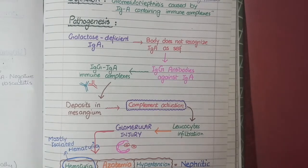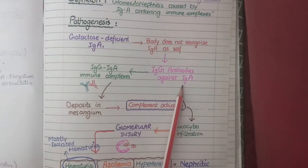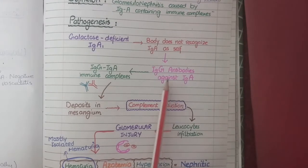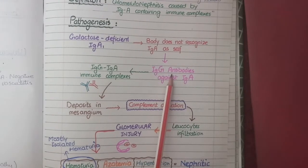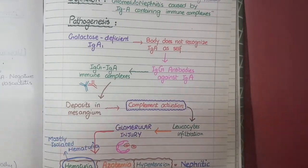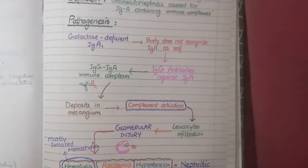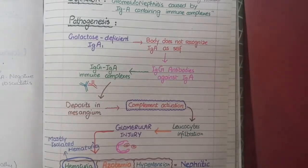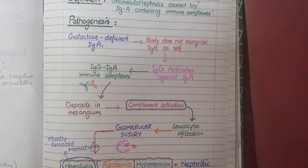As a result, the immune system develops IgG antibodies against these abnormal IgA antibodies. Interestingly, the IgA antibody itself is acting as an antigen, and IgG antibodies are being developed against it as an immune response. This results in the formation of IgA-IgG immune complexes, which have an affinity to bind to the mesangium of the glomeruli and become deposited there.